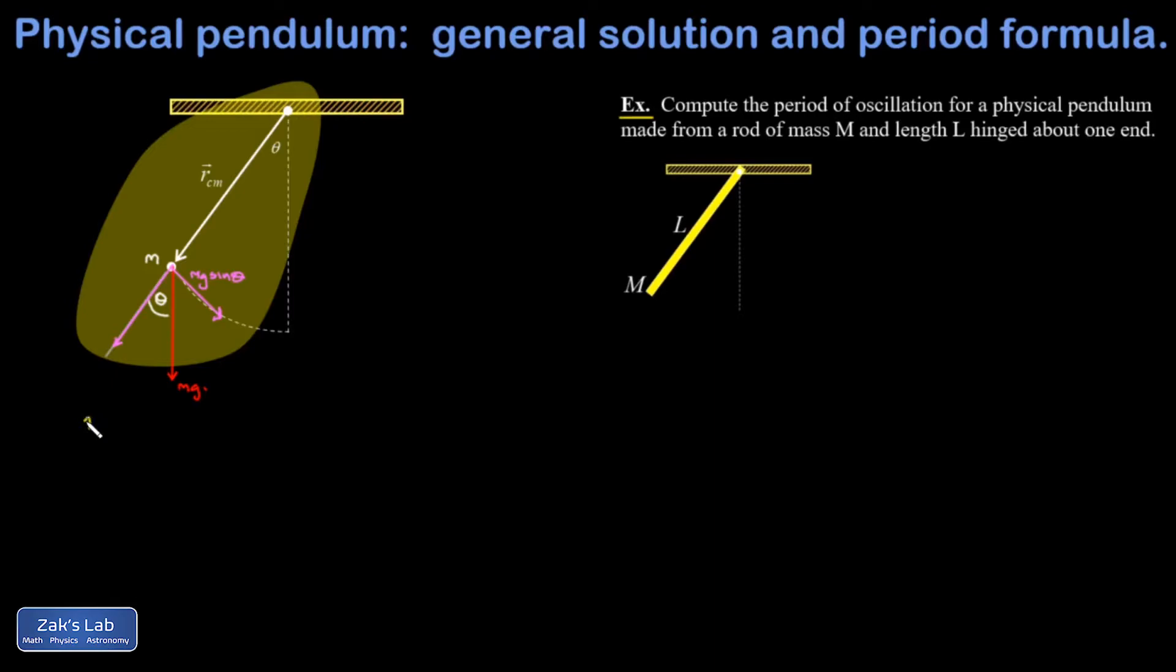So now I'm going to apply the rotational equivalent of Newton's second law. That's tau equals I alpha. Torque equals moment of inertia times angular acceleration. And I have to be really careful here to get the sign correct on this.